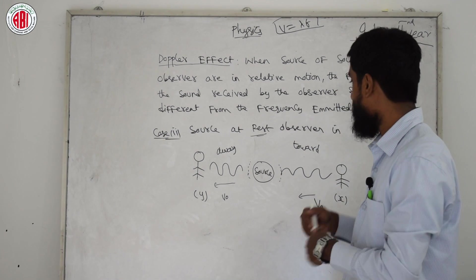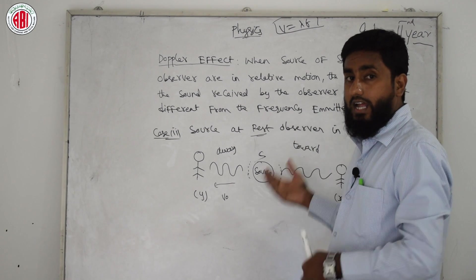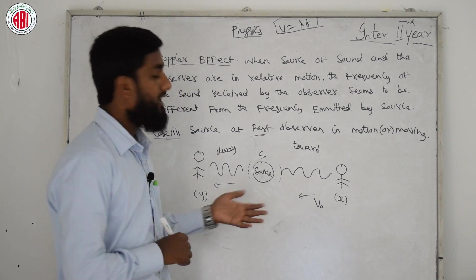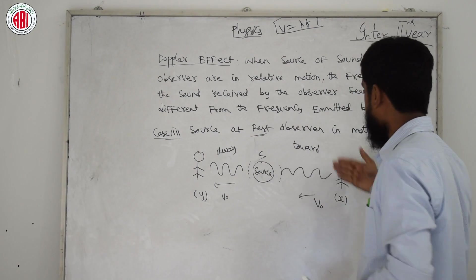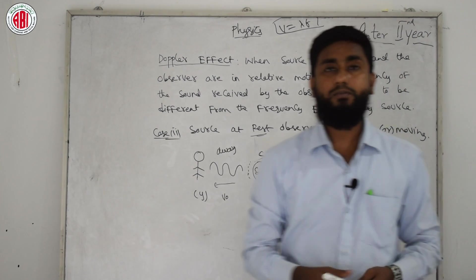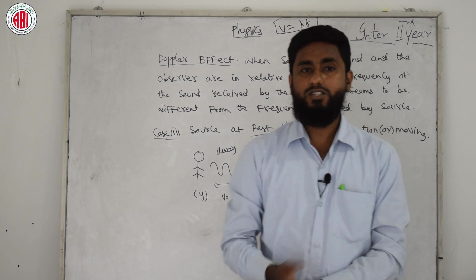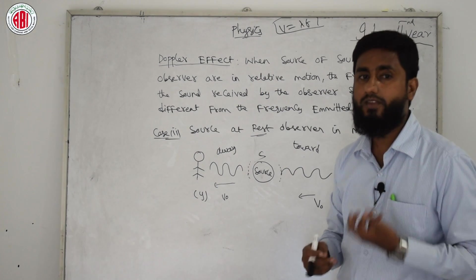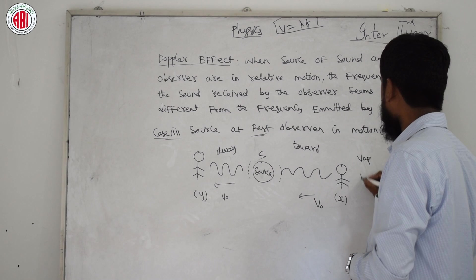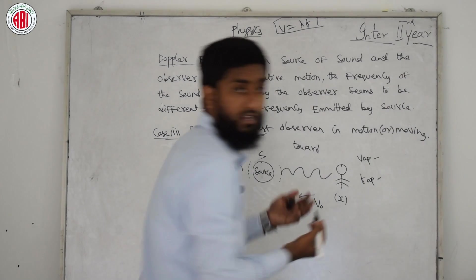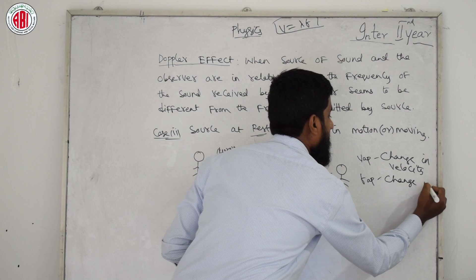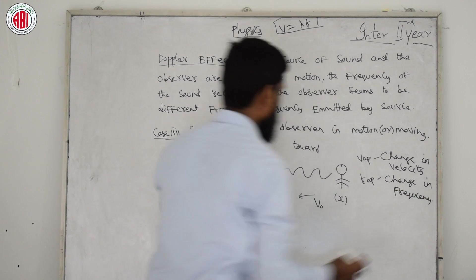Let v be the velocity of the waves, v₀ be the velocity of the observer, v_ap be the change in velocity, and f_ap be the change in apparent frequency. For observer Y (moving away from source): v_ap = v − v₀, because the frequency heard decreases. For observer X (moving towards source): v_ap = v + v₀.